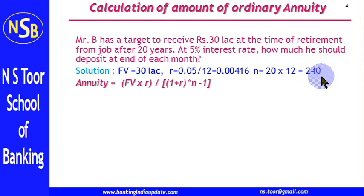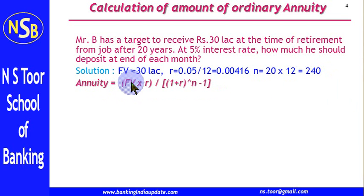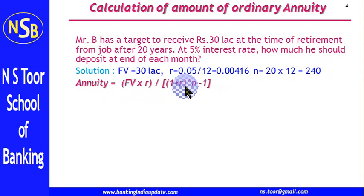This is the formula which we shall use to calculate the amount of annuity. The amount of annuity is equal to future value multiplied by rate of interest, divided by (1 plus r) raised to the power n, minus 1.